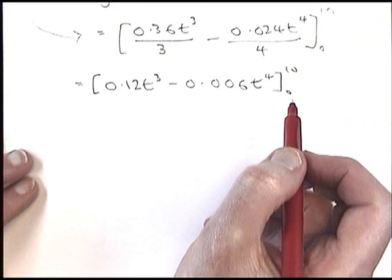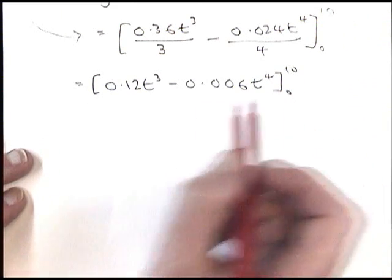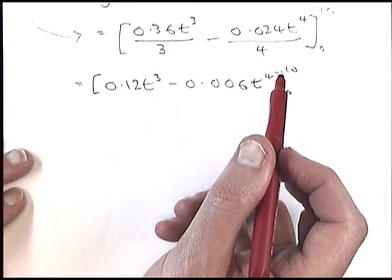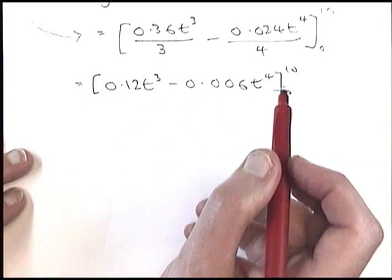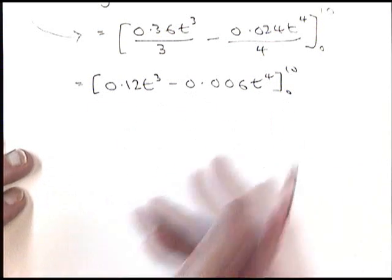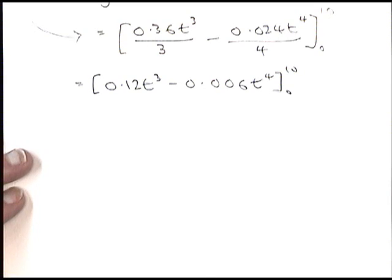Now, these limits, that's what we call these, means I need to replace the t with a 10, work the expression out, then replace the t with a 0, work the expression out, and find the difference between the two of them.